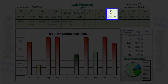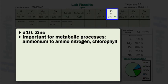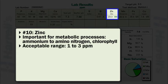Zinc is an important micronutrient element needed for numerous plant metabolic processes such as the conversion of ammonium to amino nitrogen. In addition, zinc is necessary for chlorophyll production. In general, the acceptable soil test range for zinc is 1 to 3 parts per million. It should be noted, however, that direct correlations regarding soil test zinc content and plant responses have not been clearly established.